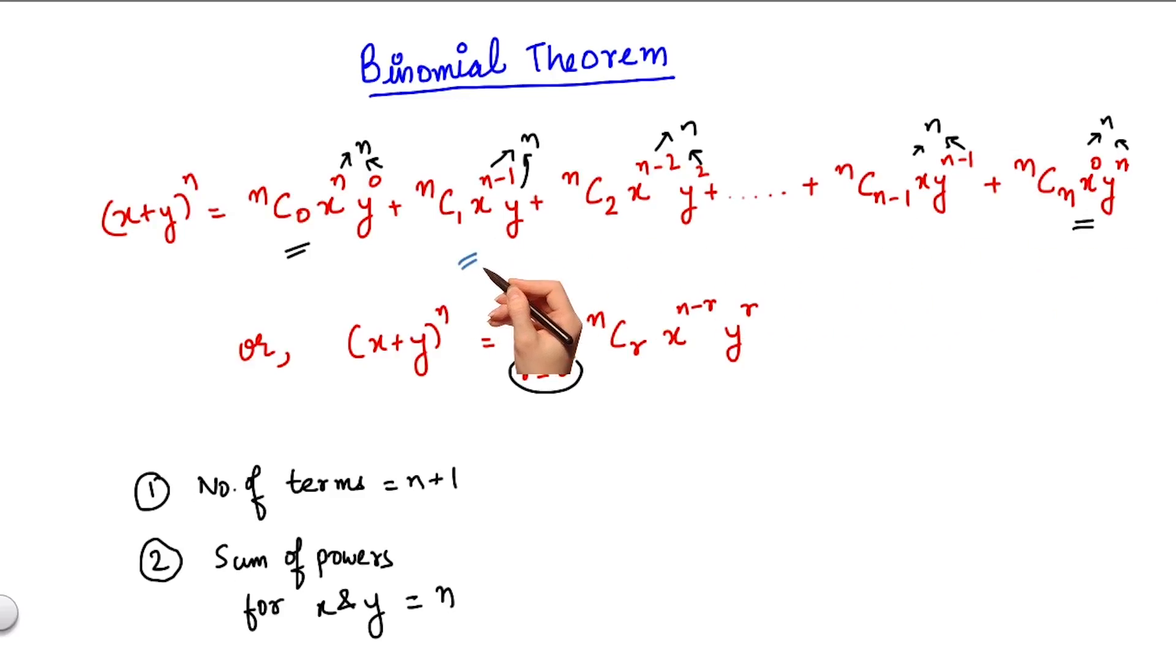Similarly, for the second and the nth term, the binomial coefficients are nC1 and nC(n-1) which are again equal as nCr equals nC(n-r). And so on we can see it for the other terms as well.